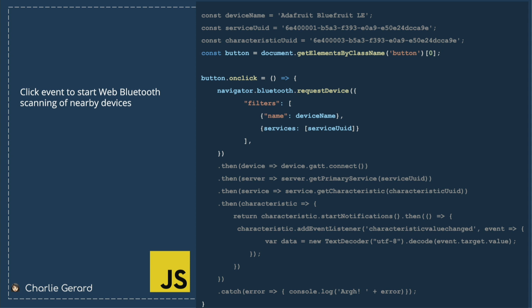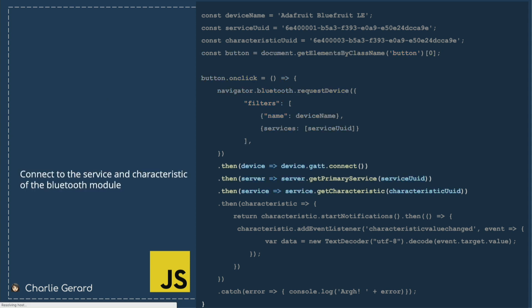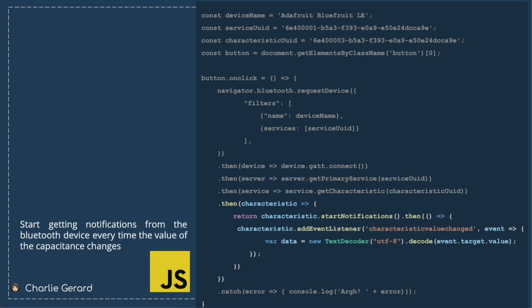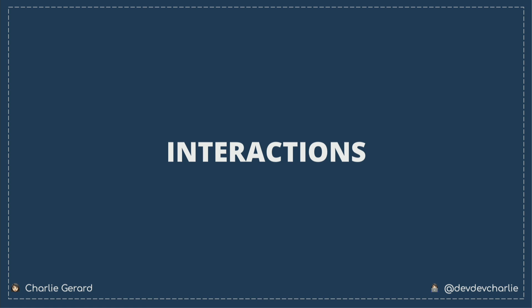On the web page we have a button, and when clicked we request nearby devices with options to filter to our Adafruit module and the services we want, then connect to it. We get the primary service, get the characteristic, and then start getting data from the Arduino. We call the startNotification method on the characteristic to start getting data every time it changes. Every time my touch data changes, an event listener fires, we decode it, and we get an integer in the browser to decide what to do with.